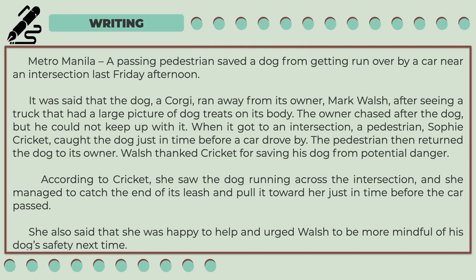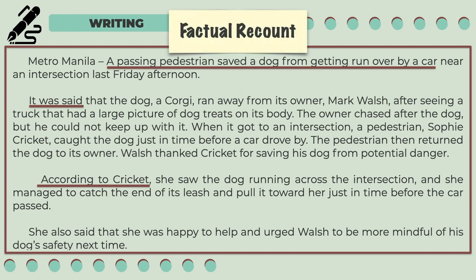According to Cricket, she saw the dog running across the intersection and managed to catch the end of its leash and pull it toward her just in time before the car passed. She also said that she was happy to help and urged Walsh to be more mindful of his dog's safety next time. Again, to identify the type of recount, you first have to know what the text is all about. This is about a passing pedestrian who saved a dog from getting run over by a car. The text also indicates that the author is not included in the incident through the signal words it was said and according to Cricket. Since this is written in the third-person point of view and appears to be a news report, this is an example of a factual recount.